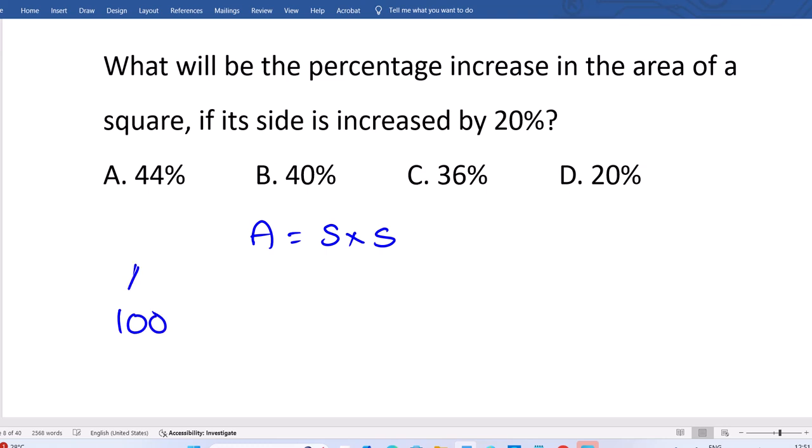Let's say initially area is 100. First time 20% increase means it will become 120. Again 20% increase because two sides are available.